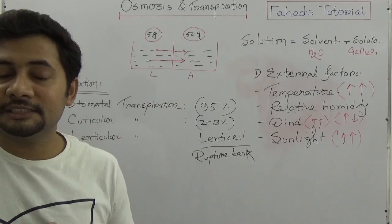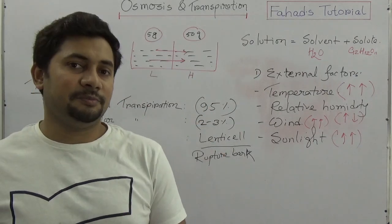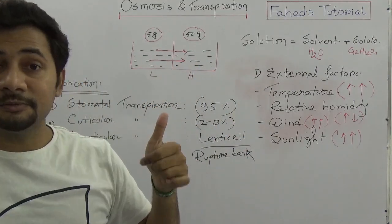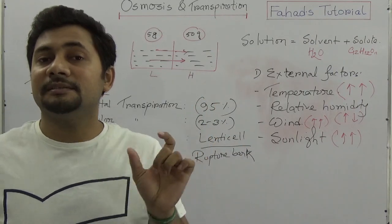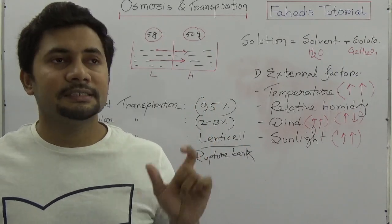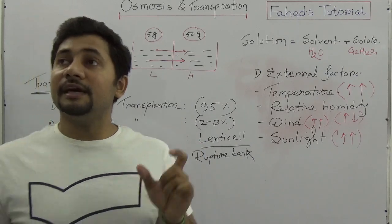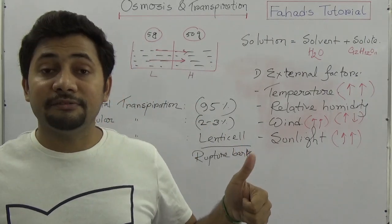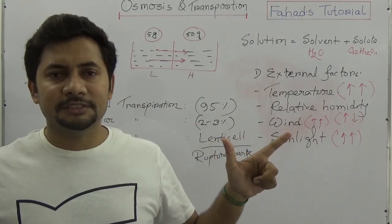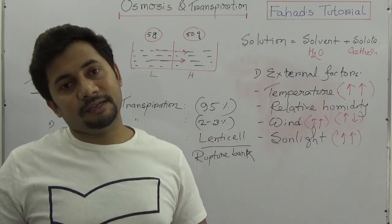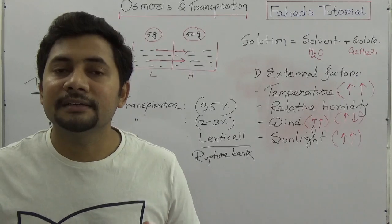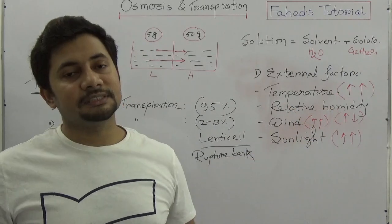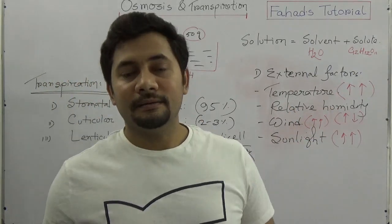In this video I have briefly explained osmosis and transpiration. You must remember the definition of osmosis, the process, and the types — exosmosis and endosmosis. Remember that protoplasm is known as the physical basis of life and water is known as the fluid of life. You must remember the definition of diffusion, osmosis, and the factors affecting them. Understand transpiration — its definition, types, and the factors affecting it. Study perfectly.